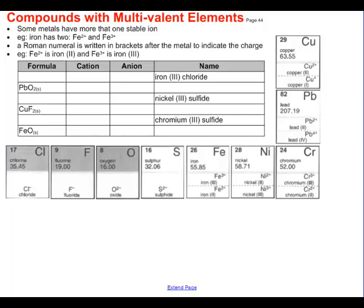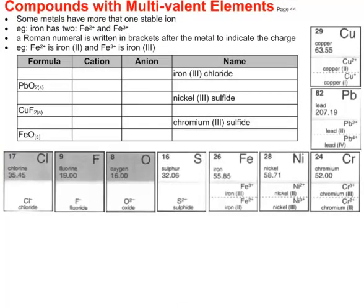There is a bit of a problem with some of our metals on the periodic table. Some of them have more than one stable ion. For example, iron has two. It can be iron with a two plus charge or iron with a three plus charge. How are we going to tell them apart? It's actually pretty easy. We put a Roman numeral after it. So iron II means iron with a two plus charge, and iron Roman numeral III means iron with a three plus charge.